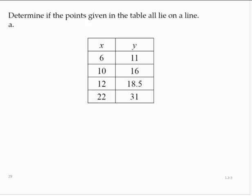Determine if the points given in the table all lie on a line. If they do lie on a line, we will see a constant slope from point to point. So let's calculate the changes and then the ratio to determine the slope.